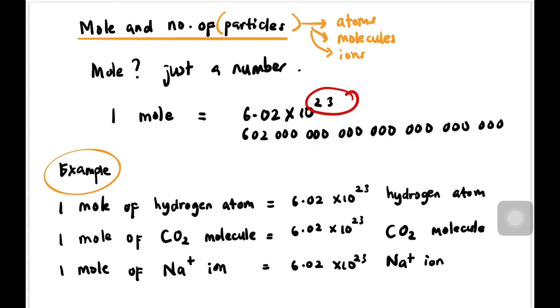For example, if I say one mole of hydrogen atom, I have 6.02 × 10²³ hydrogen atoms. One mole of CO₂ molecule equals 6.02 × 10²³ CO₂ molecules, and one mole of Na⁺ ion equals 6.02 × 10²³ Na⁺ ions.